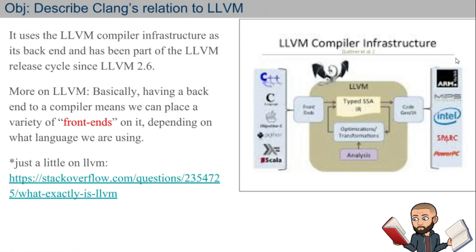The picture on this slide helps quite a bit. You have LLVM here, and you can put different types of languages into the front end. In our case, this is Clang. Clang takes the language, it goes through something called SSA, then we get any of the types of assembly language we want from that process inside of LLVM.